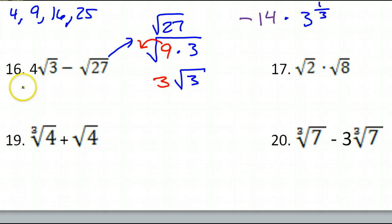That means I can rewrite this problem. Now I've got 4 radical 3 minus, now instead of writing radical 27, I can put 3 radical 3. And now you can see that these are in fact like terms. I've got radical 3 and radical 3. So 4 minus 3 is 1, so this is just going to be 1 radical 3. But we don't put the unnecessary 1, we just put radical 3. So that should be your answer for number 16.